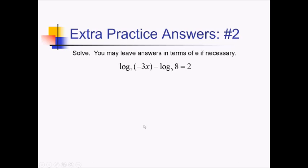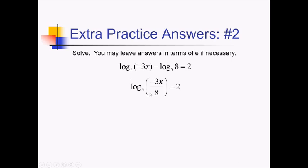To get started on this problem, we're going to combine the logs on the left side. When you're solving these in general, you only want at most one log on each side of the equation. So if we combine these, we're subtracting the logs — that means we're dividing the things inside the logs. So we really just have to write log base 5 of the fraction negative 3x over 8. All that equals 2.